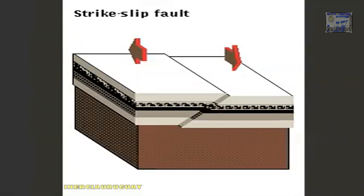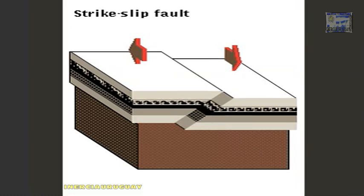When the plates move past each other, the relative motion is horizontal, and we have a strike-slip fault. The San Andreas fault, for example, is a strike-slip fault.